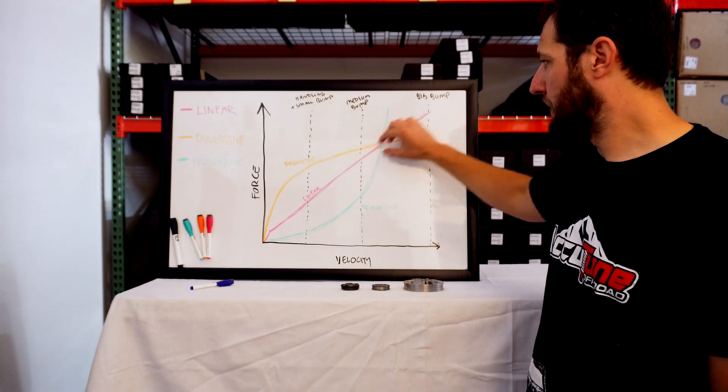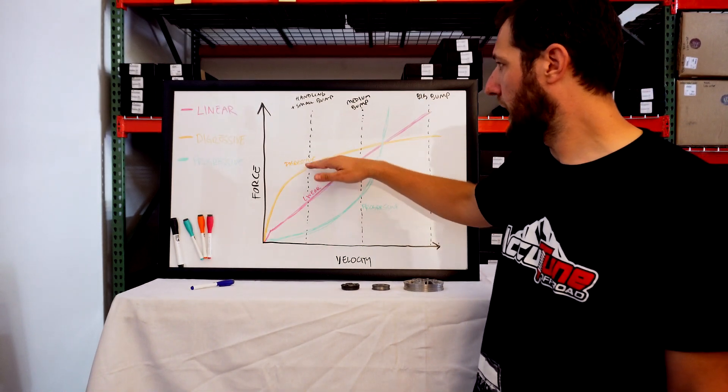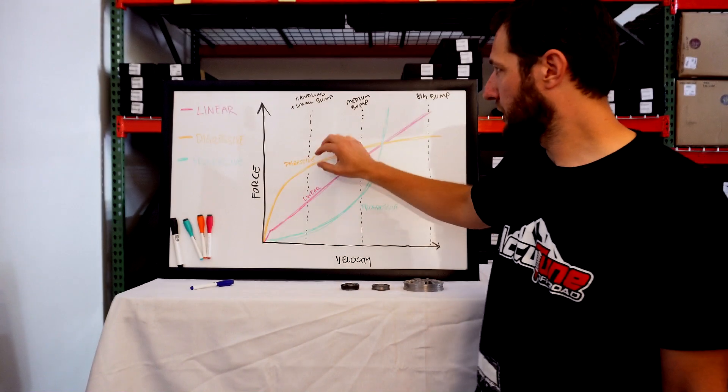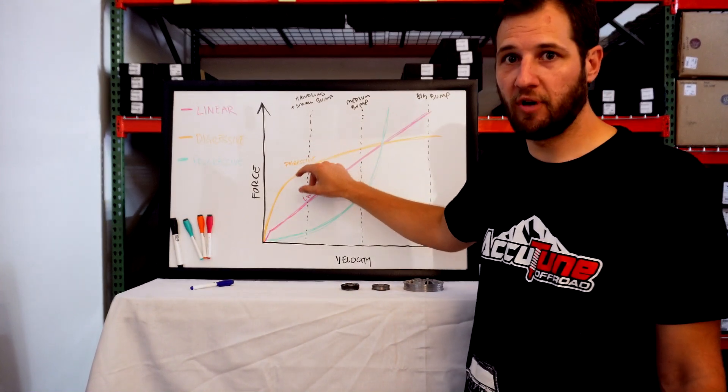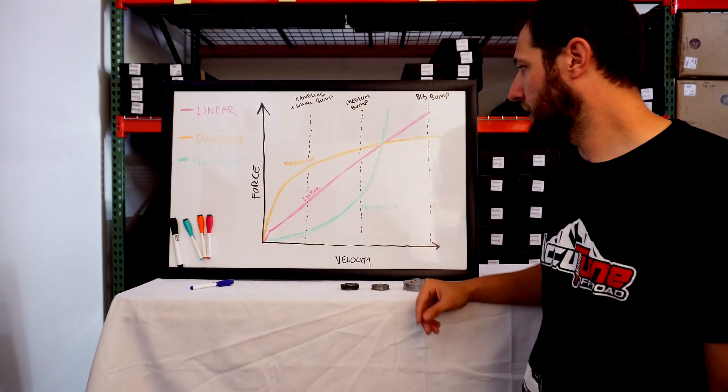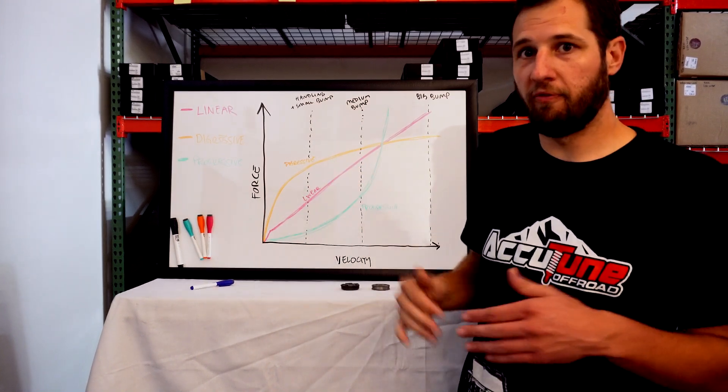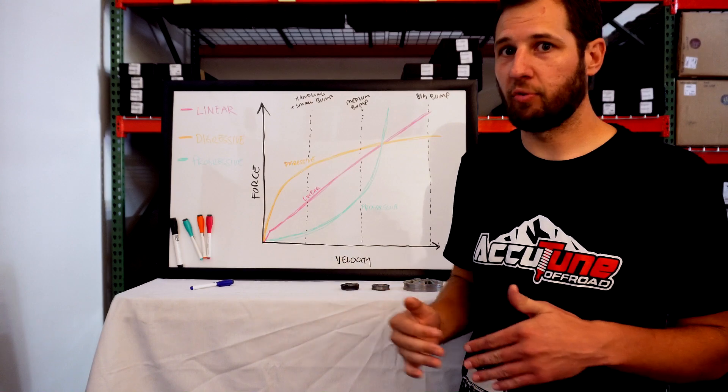If you're buying coilovers for your daily driver, for your Tacoma or for your rock crawler pre-runner, you're going to want to get a linear piston because it sort of has the best benefits. You're not trading off this comfort for bottoming out at low speed, or you're not trading off this really poor performance on washboard.